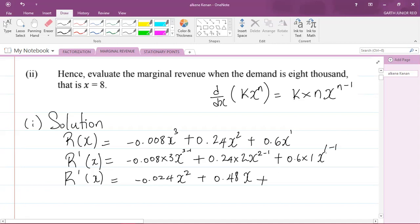So I have 0.48 times x. Plus you have x to the power of one minus one, which is x to the power of zero. x to the power of zero is just one, so what I have here is 0.6 multiplied by one, which is 0.6. And that is my marginal revenue function. So part one is now completed.